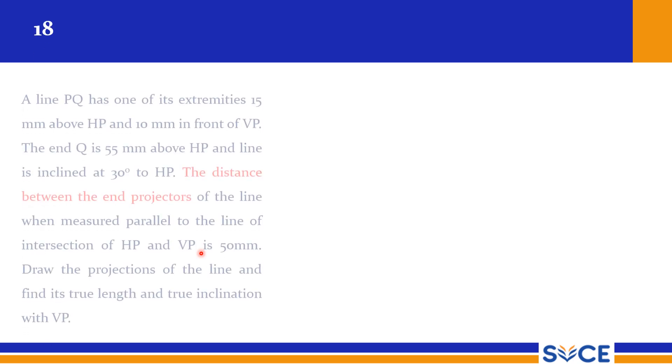Students, now we will see a few more problems where the distance between end projectors is given. We know that the end projectors are two parallel lines. On the first end projector we will have A' and A, and on the second end projector we will have B' and B. With this clue, we need to proceed in this type of problem.